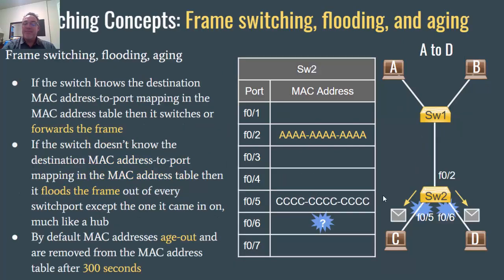In the next slide, the frame now gets to Switch2 and we're looking at the Switch2 MAC address table. Switch2 learns that host A is on port 2 — as far as Switch2 is concerned — because it saw the frame cross port 2. So it associates port 2 with host A: if you want to get to host A, you go out port 2. You can see it has added A's MAC address to port 2.